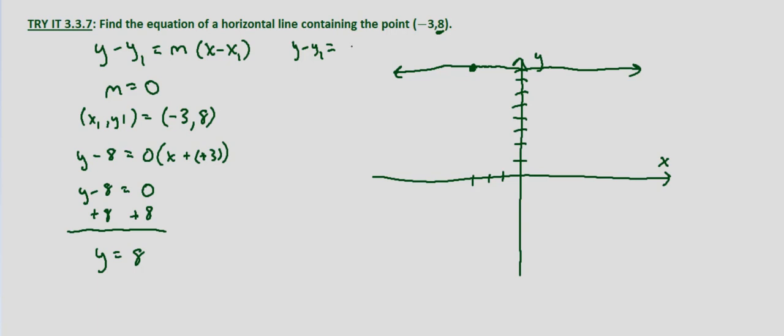So our equation is always going to be y equals y1, which is the y-coordinate of any point on a horizontal line.